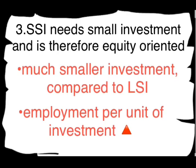Since SSIs are labor-intensive, employment per unit of investment is high. Small scale industries are easy to establish. They need less investment, and thus equity is promoted. How is equity promoted? Because if there is employment, unemployment will reduce and poverty will reduce. The gap between the rich and the poor will narrow. So small scale industries play an important role in achieving equity and growth with social justice.